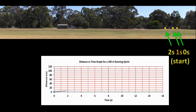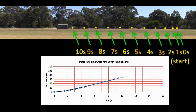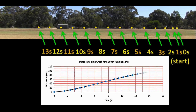A distance versus time graph gives us information about where an object is at any given time. This information can be useful in its own right, but it can also be used to calculate the speed of an object.